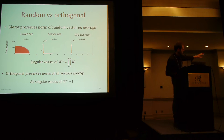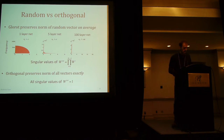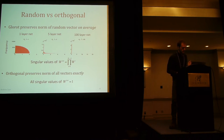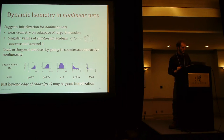Whereas if you initialize with orthogonal matrices, it doesn't matter how deep the network is — all your singular values are exactly 1. It's a perfect isometry. We think that explains why these orthogonal matrices do better, and that suggests the idea of isometry might be useful for initializations of non-linear networks as well.